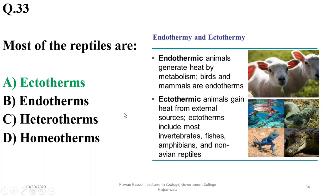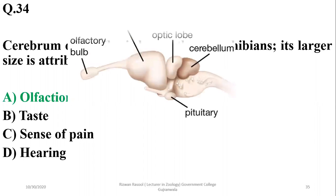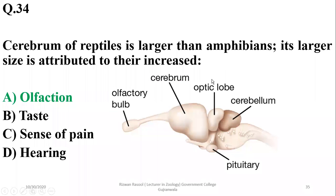Question thirty-three: the cerebrum of reptiles is larger than that of amphibians, and its larger size is usually attributed to their increased sense of olfaction or smell. The correct option is alpha. The cerebrum shows progressive development over evolutionary history across different groups of vertebrates.